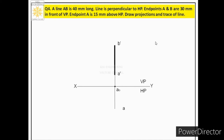Next we draw the top view. From the pictorial representation, when we look at a line perpendicular to HP from the top, we see only a point. So on HP its view is a point. We mark the end of the projector as the top view of the line. When looking from the top, B is seen first and A is below B, so the top view is marked as B outside the bracket and A inside the bracket.